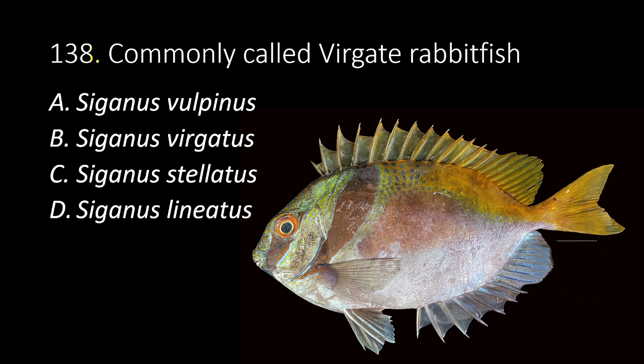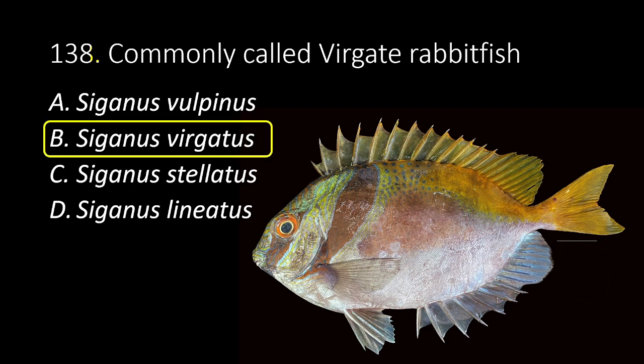138. Commonly called vergate rabbit fish. A. Siganus vulpinus. B. Siganus virgatus. C. Siganus stellatus. D. Siganus lineatus. The answer is B, Siganus virgatus.